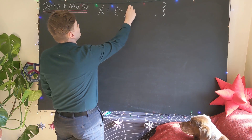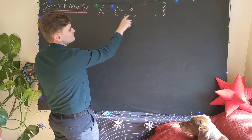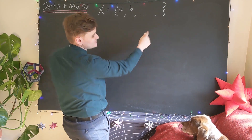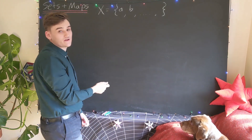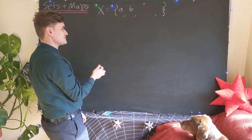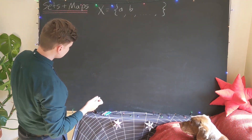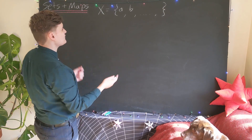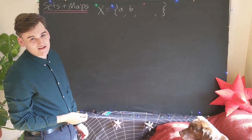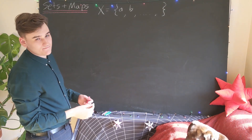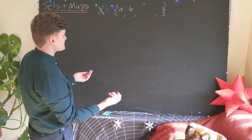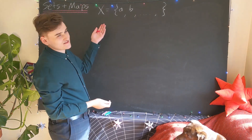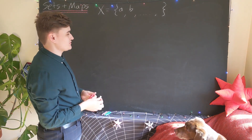So a and b, say, are going to be elements of the set x, and we could have a potentially infinite number of elements. As I've said, the set is a fairly primitive object — it has basically no structure. All the set can really know is whether or not an element is in the set or not.